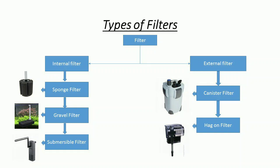The filters available in aquascape are mainly of two types: internal filters and external filters. The internal filter system is built inside the tank, while the external filter system is placed outside. The internal filters include the sponge filter, which is used inside tanks, and the air filter system.